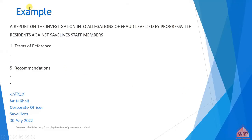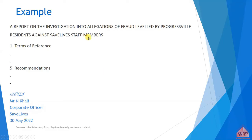This is a typical skeleton of your investigative report. My title in this case will be: 'A REPORT ON THE INVESTIGATION INTO ALLEGATIONS OF FRAUD LEVELED BY PROGRESSVILLE RESIDENTS AGAINST SAVE LIVES STAFF MEMBERS.' As you can see, there is no full stop and there is no numbering. Then after stating the title, just underneath it, you will write your number one — your terms of reference — followed by all the other parts all the way to the compiler's details.